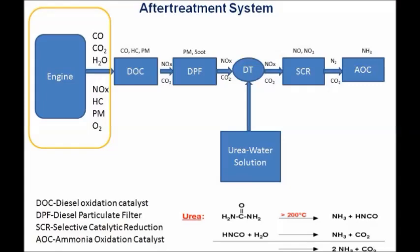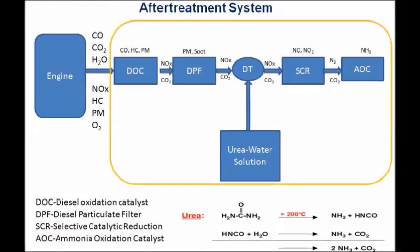Dear friends, let me explain the process of after treatment system through this slide. The engine liberates harmful gases such as carbon monoxide, carbon dioxide, unburnt hydrocarbons, NOx — which is a combination of nitric oxide and nitrogen dioxide — oxygen, and a little amount of water. These exhaust gases pass through the after treatment system which comprises of four different catalysts: DOC, DPF, SCR, and AOC.